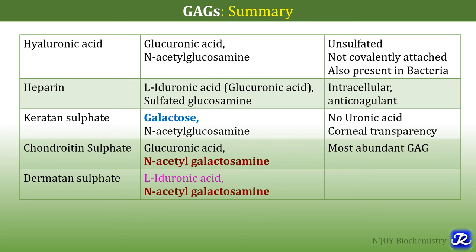Heparin composition is L-iduronic acid and sulfated glucosamine. It is the only GAG which is intracellular and it is also an anticoagulant. Keratan sulfate consists of galactose and N-acetylglucosamine — it is the GAG which does not contain any uronic acid, no glucuronic acid and no iduronic acid. It is responsible for corneal transparency. Chondroitin sulfate consists of glucuronic acid and N-acetylgalactosamine — it is the most abundant GAG. Dermatan sulfate consists of L-iduronic acid and N-acetylgalactosamine — other than chondroitin sulfate, dermatan sulfate is the GAG which has galactosamine as its amino sugar.